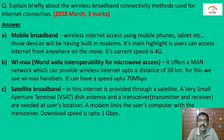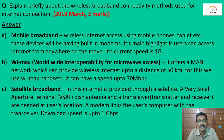The third wireless broadband method is satellite broadband, which uses a transmitter and receiver (transceiver). The user's computer modem is connected to the transceiver, and the download speed can reach up to 1 Gbps.